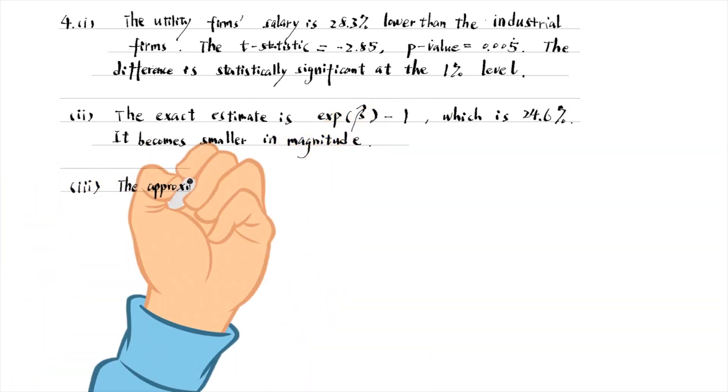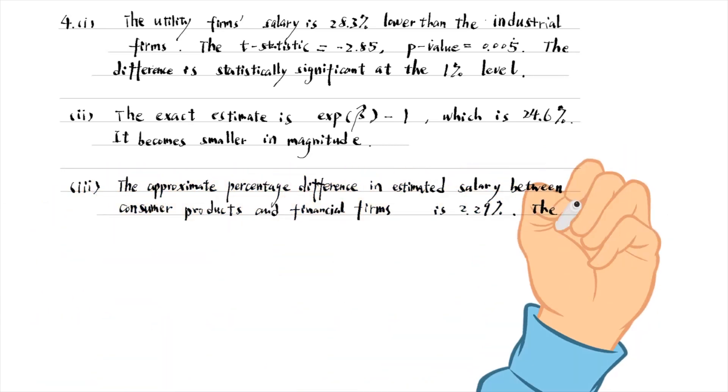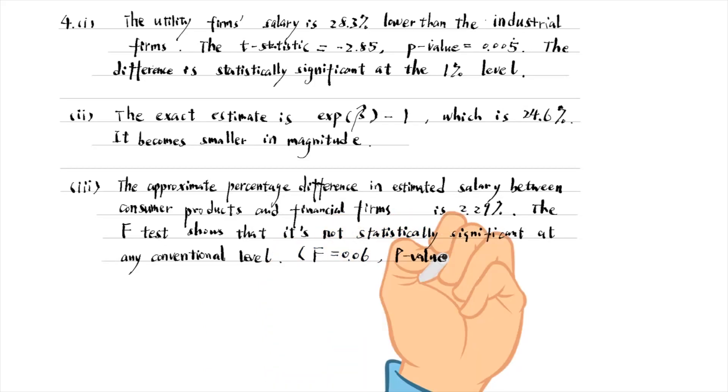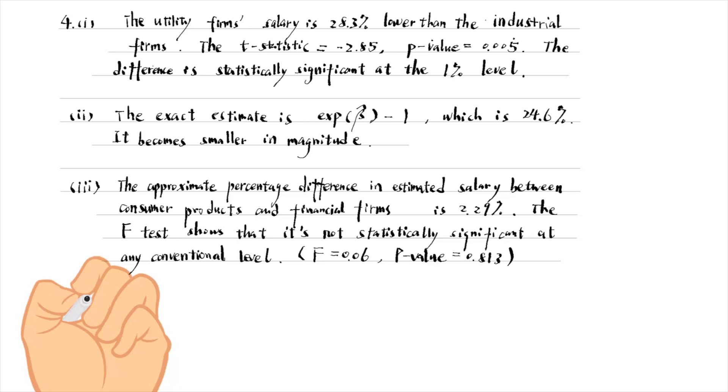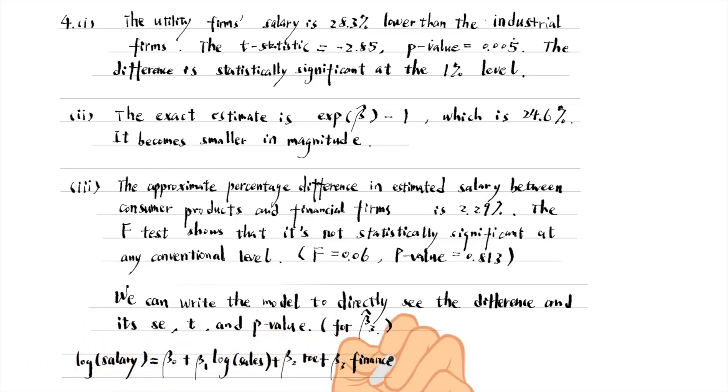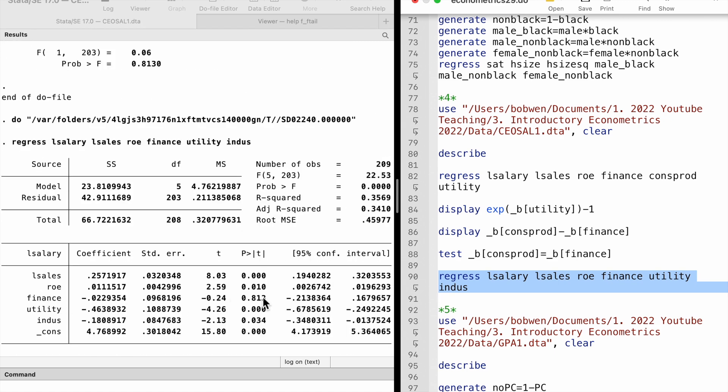The approximate percentage difference in estimated salary between consumer product firms and financial firms is 2.29 percent. The f-statistic is 0.06 and its p-value is 0.813. It is not statistically significant at any conventional level. We can also write the model to directly see the salary difference and its standard error, t-statistic, and p-value. It gives the same conclusion.